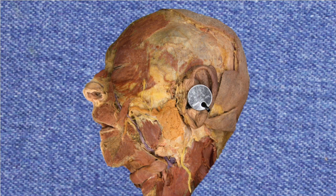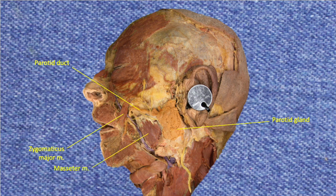Before starting the dissection of the infratemporal fossa, let's review the structures we previously identified when we performed the superficial dissection of the face. Here we see the largest salivary gland, the parotid gland, and its duct, the parotid duct. One of the muscles of facial expression is evident, the zygomaticus major. We can also identify the masseter muscle, a major muscle of mastication.